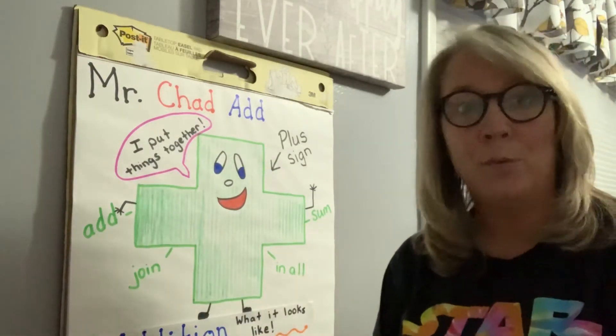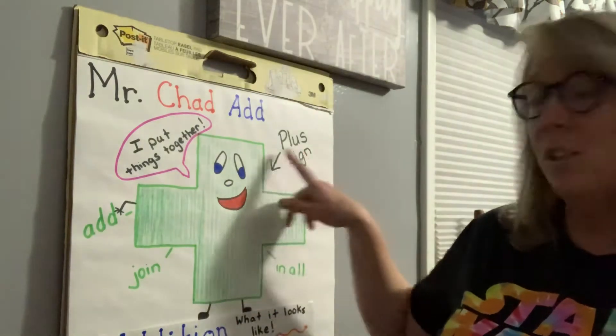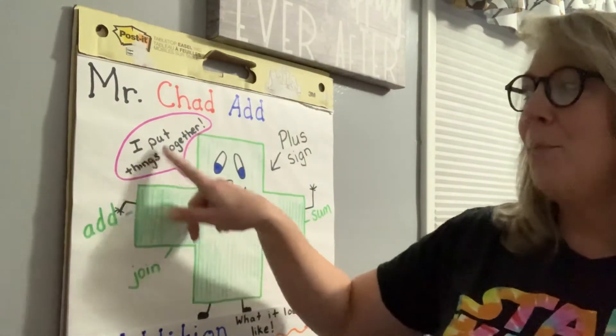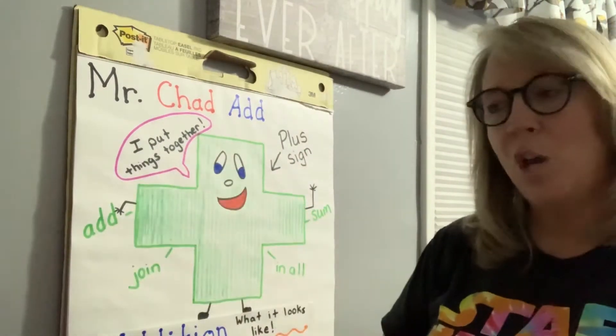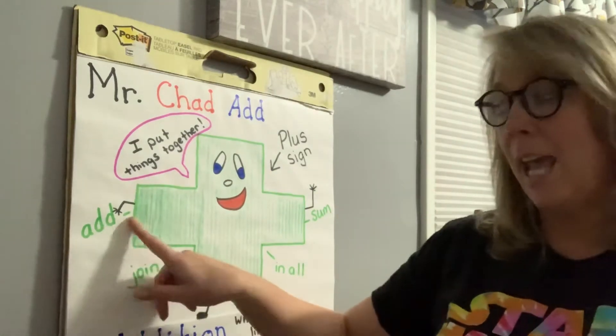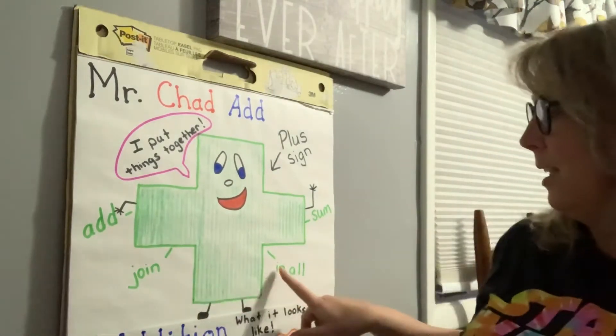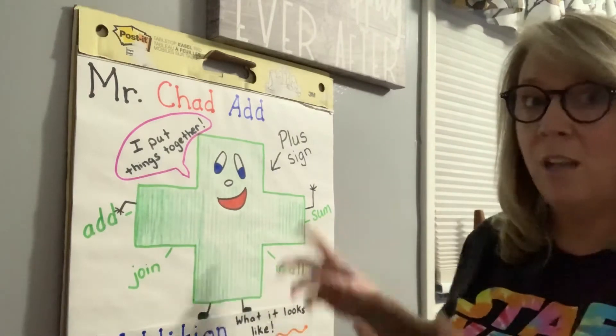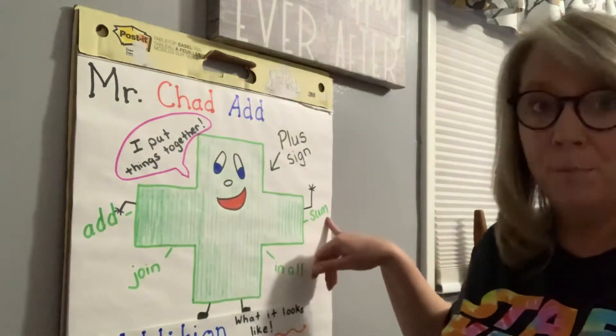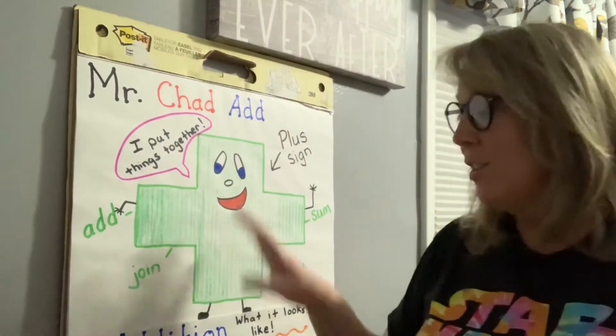We're going to continue with it next week and we're going to be grouping. But this is called a plus sign and it says 'I put things together.' So he puts numbers and things like that together. He adds, he joins, he does in all. So he puts it all together and he sums, that means it's a total.